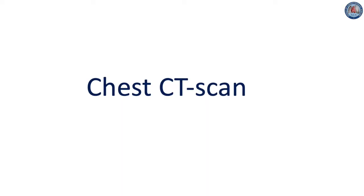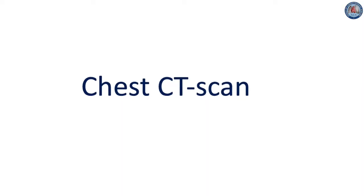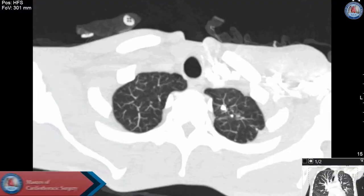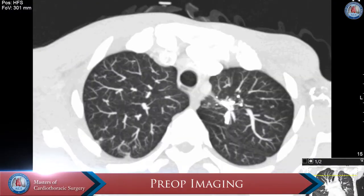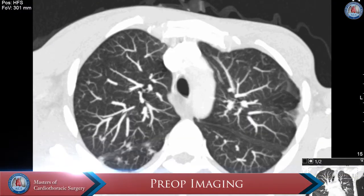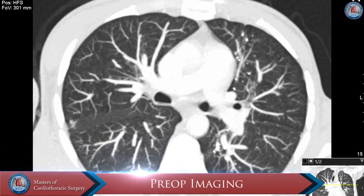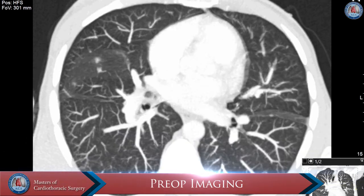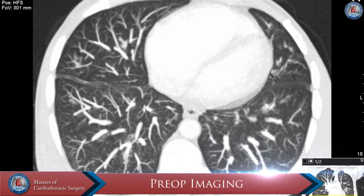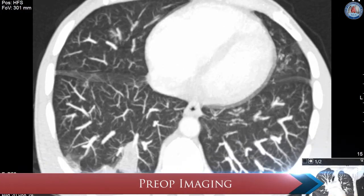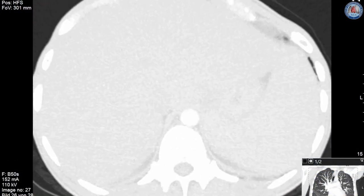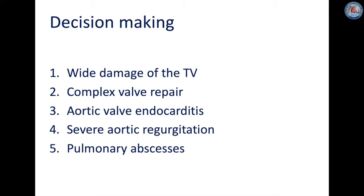Chest CT scan shows the presence of multiple pulmonary abscesses. The indication for surgery is defined by the presence of combined right and left-sided infective endocarditis with severe aortic regurgitation and concomitant severe tricuspid regurgitation.